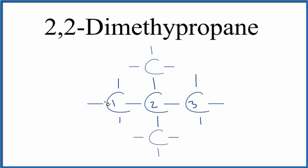So now we have our propane, that's the three. And on the second carbon, we have these two methyl groups, one here and one here. That makes this the structural formula for 2,2-dimethylpropane.